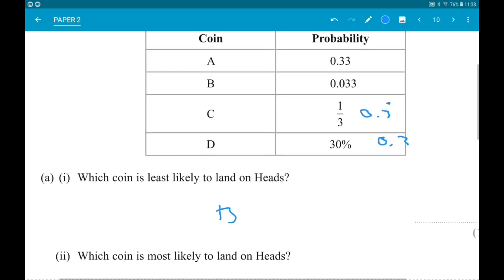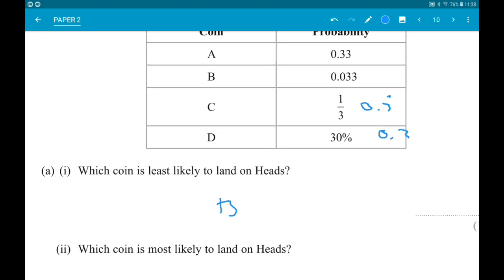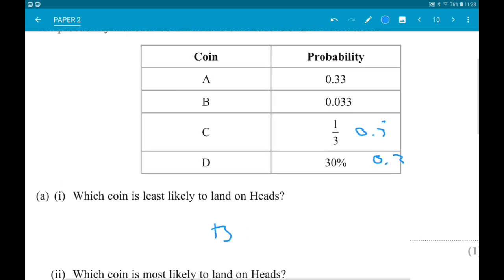Part A2: Which coin is most likely to land on heads? The biggest probability is one third because it's 0.333 forever. So that is C.